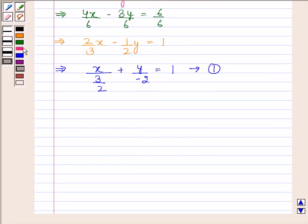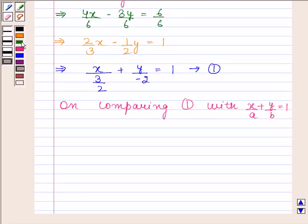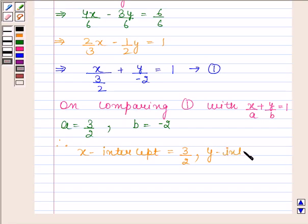Now we will find its intercepts on both axes. On comparing this with x by a plus y by b equals 1, we find that a equals 3 by 2 and b equals minus 2. Therefore, the x-intercept is 3 by 2 and the y-intercept is minus 2.